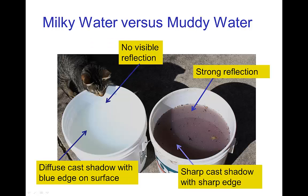We can compare this with milky water as opposed to murky muddy water. With milky water, we have a more diffuse cast shadow because of subsurface scattering, and in fact it has something of a blue edge. As with clear water, there's not much reflection — you don't see a reflection of my cat's face in the water. With muddy water we saw a strong cast shadow with a sharp edge and a strong reflection of the sides of the bucket.